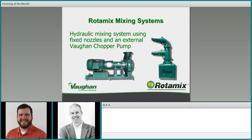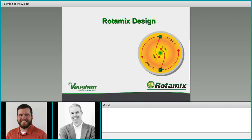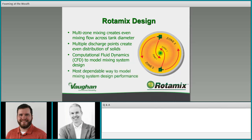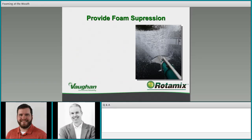A brief description of Rotomix mixing systems: it's a hydraulic mixing system using fixed nozzles and an external Vaughan chopper pump. The design is multi-zone mixing, which creates even mixing flow across the tank diameter using multiple discharge points and even distribution of solids. We use computational fluid dynamics to model mixing system designs, ensure performance, and meet design specs for optimal mixing flow in your digester volume. It's the most dependable way to model mixing system design performance before you put the system in.